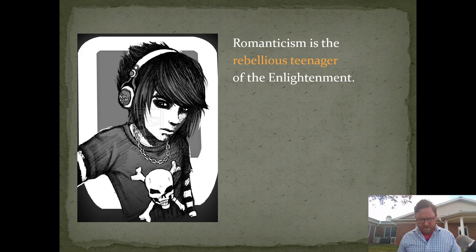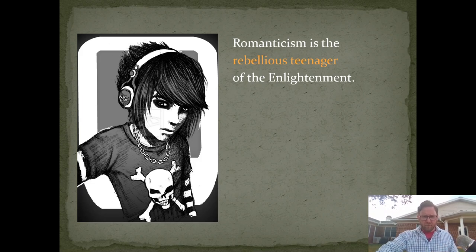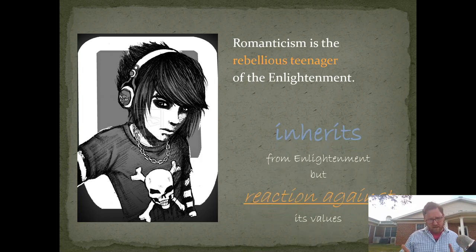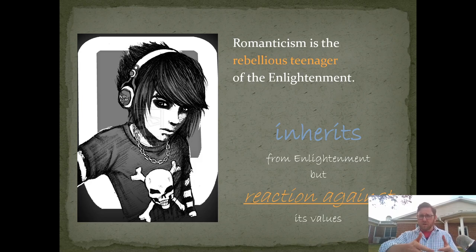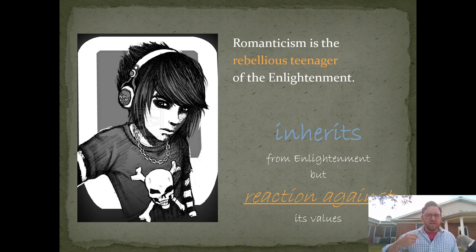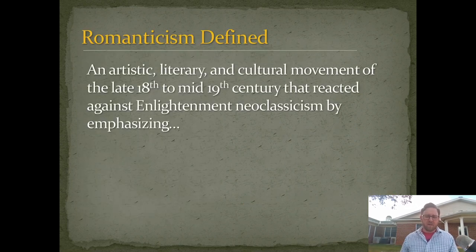Romanticism is the rebellious teenager of the Enlightenment. That's my metaphor, not a formal definition, but I think it's helpful. Romanticism is the rebellious teenager of the Enlightenment because it inherits some of the Enlightenment ideals — inherits much, I'd say — but is largely and self-consciously a reaction against the values of the Enlightenment and its artistic movement known as neoclassicism, and the Industrial Revolution. It inherits a lot, but sees itself as a rebellion against some of the values of its parent movement.